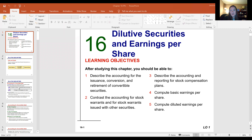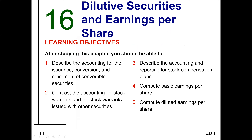Here are the chapter 16 PowerPoints. We're talking about dilutive securities and earnings per share. Some of the major learning objectives of this chapter are: describe the accounting for the issuance, conversion, and retirement of convertible securities; contrast the accounting for stock warrants issued with other securities; describe the accounting and reporting for stock compensation plans; compute basic earnings per share; and compute diluted earnings per share.